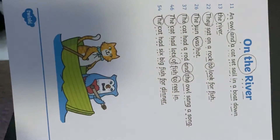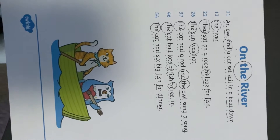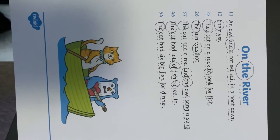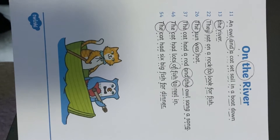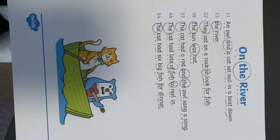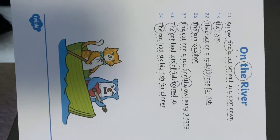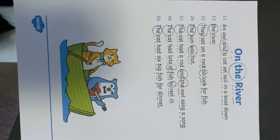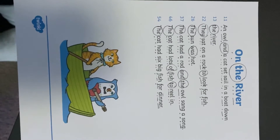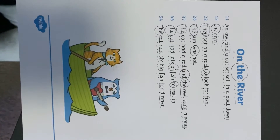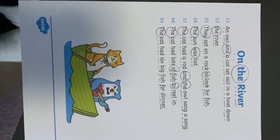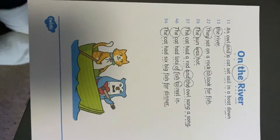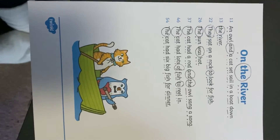What I'm going to do now is read this with expression to show you what it could sound like. An owl and a cat set sail in a boat down the river. They sat on a rock to look for fish. The sun was hot. The cat had a rod and the owl sang a song. The cat had lots of fish to reel in. The cat had six big fish for dinner. Goodness me, what a greedy cat! Do you think he shared any with the owl? That would have been kind, wouldn't it?